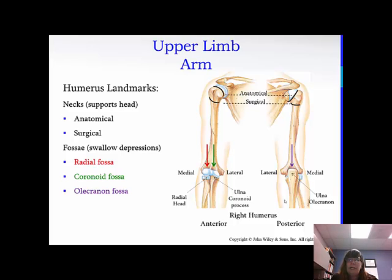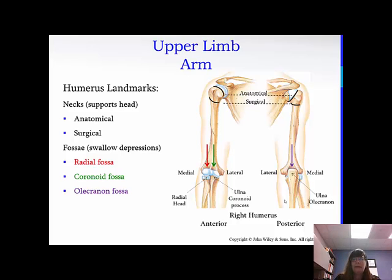Then you have the fossa, which are shallow depressions. The radial fossa, which is in red, is where the radius articulates. The coronoid fossa is where the ulna coronoid process articulates. And then you have the olecranon fossa on the posterior portion, where the olecranon — which is the top portion of the ulna — articulates. So again, the coracoid is on the shoulder and scapula; the coronoid is here in the upper limb.